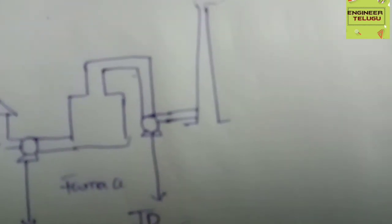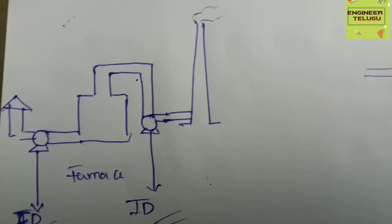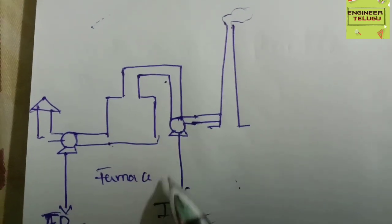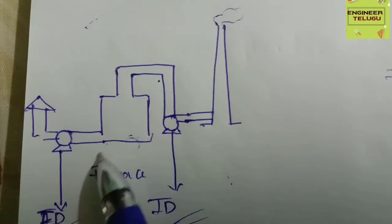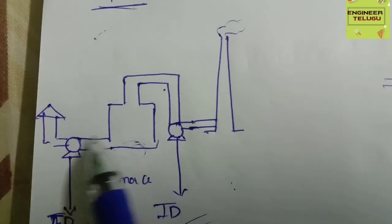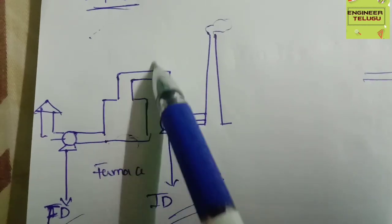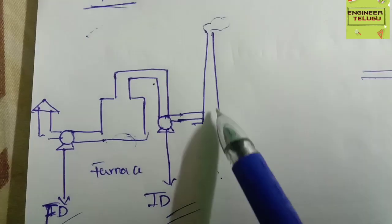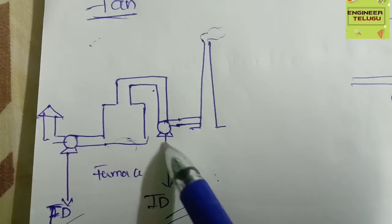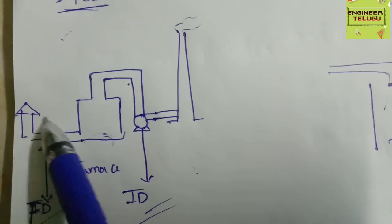This is an industrial burner. If we show a furnace, there is a combustion fuel for heating purposes. A forced draft fan pushes combustion air from the atmosphere into the furnace, and the induced draft fan handles the flue gas flow from the stack.